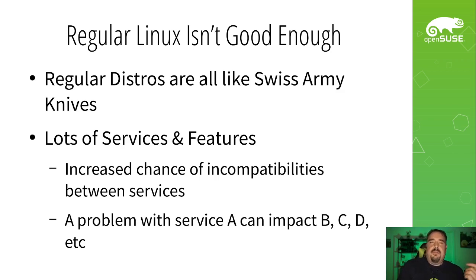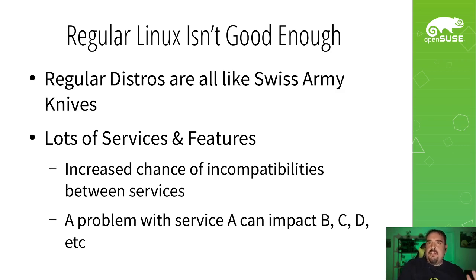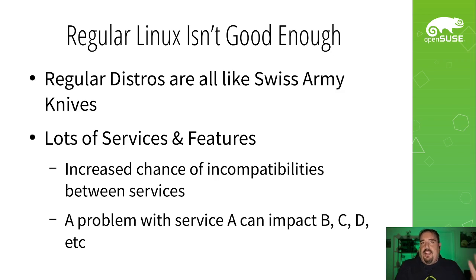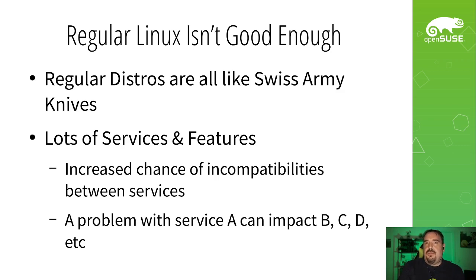Just like Swiss Army knives can do everything, it doesn't necessarily mean they can do one thing perfectly. You end up with increased chances of incompatibilities between services — that's the pain that distributions deal with when building. In production, a problem with service A can easily impact services B, C, D, et cetera. Cascading failures are a real risk with traditional Linux being used in traditional ways.